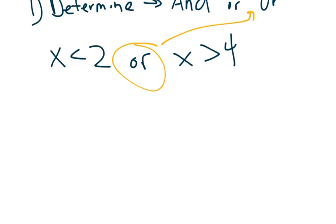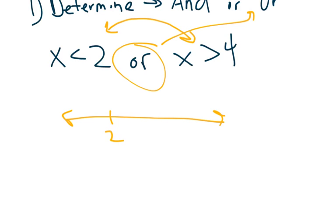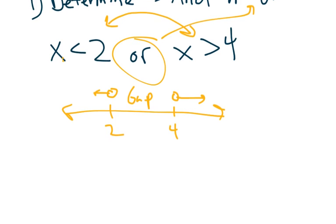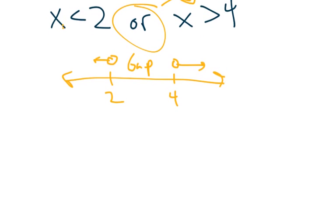Draw your number line and put the two numbers — two and four — on it. X is less than two means an open circle going to the left. X is greater than four means an open circle going to the right. Notice how they are pointing away from each other, leaving a gap. These may be written in a different order, so just pay attention to what each inequality is telling you to do.